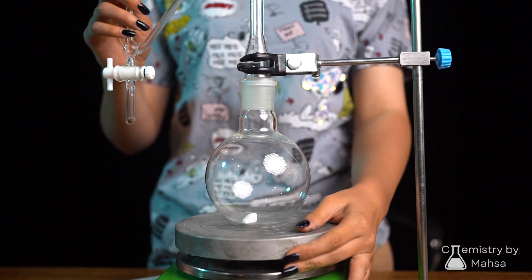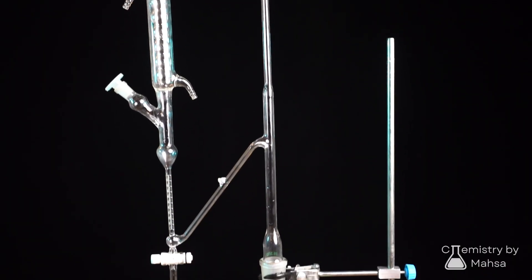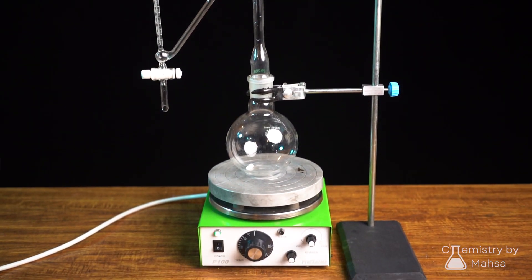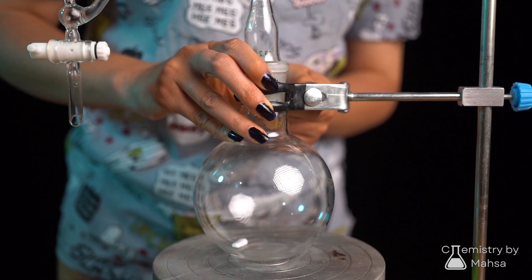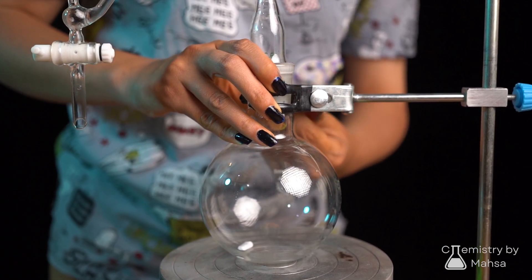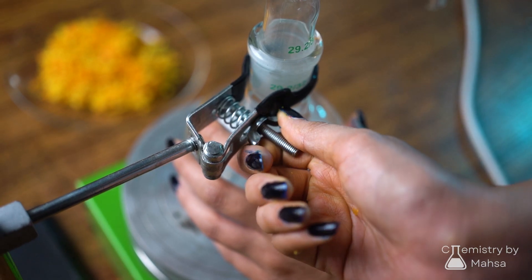There are different methods and equipment, but today I chose to use my Clevenger apparatus. Clevenger is commonly used to extract volatile substances like essential oils, so here we go today.